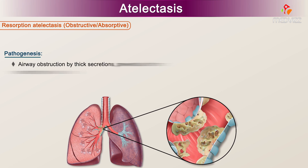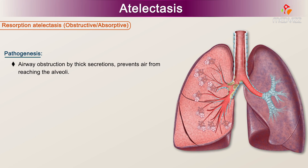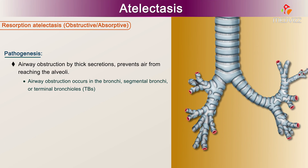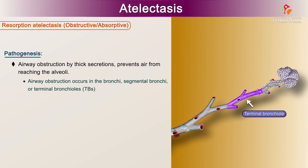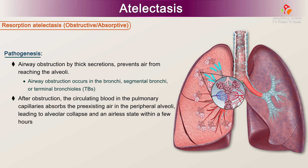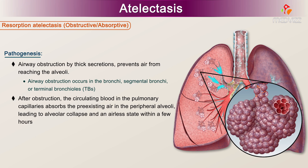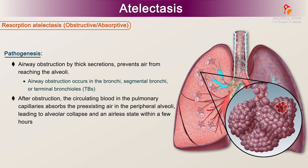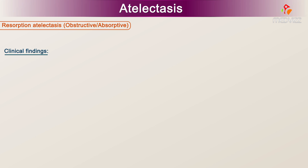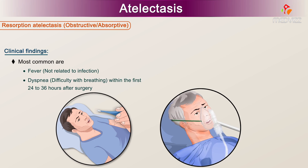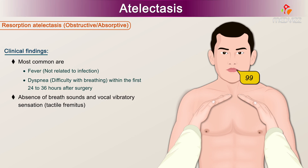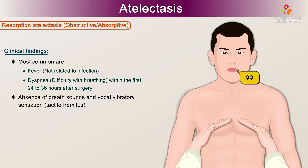Pathogenesis: Airway obstruction by thick secretions prevents air from reaching the alveoli. Airway obstruction occurs in the bronchi, segmental bronchi, or terminal bronchioles. After obstruction, the circulating blood in the pulmonary capillaries absorbs the pre-existing air in the peripheral alveoli, leading to alveolar collapse and an airless state within a few hours. Clinical findings: Most common are fever — not related to infection — and dyspnea, difficulty with breathing, within the first 24–36 hours after surgery. Absence of breath sounds, vocal vibratory sensation, and tactile fremitus. Dullness to percussion.